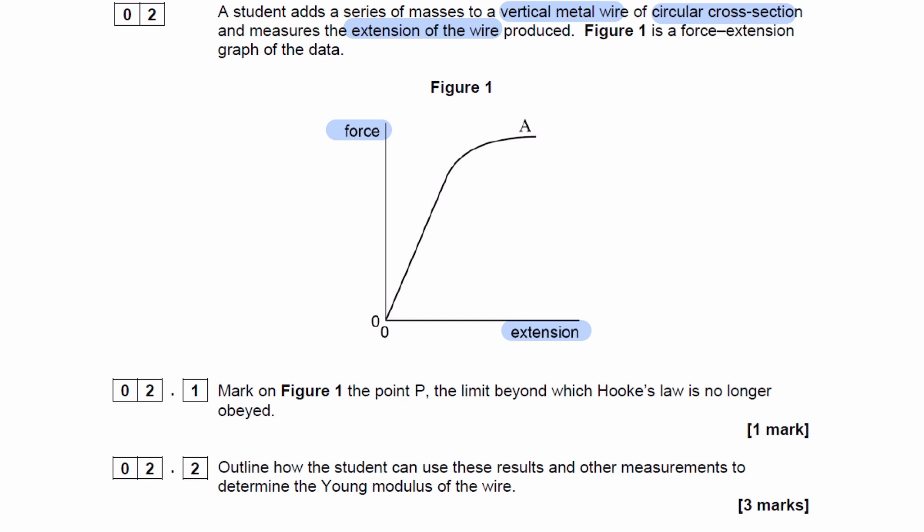Question 2.1 is to mark on Figure 1 point P, the limit beyond which Hooke's law is no longer obeyed. So that would be when this curve is no longer a straight line, which would be over here.